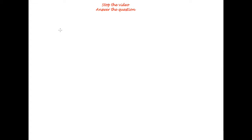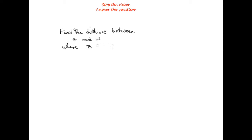We'll find the distance between z and w, where z equals 2 plus 3i and w equals negative 1 minus 2i. Stop the video and see how you get on.